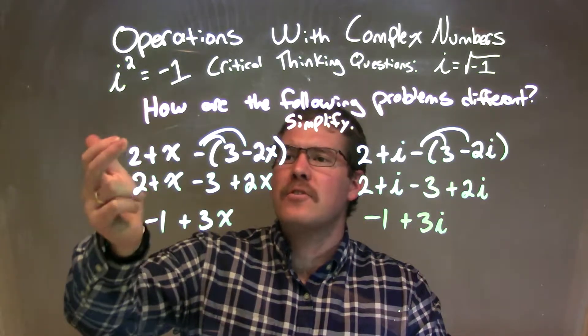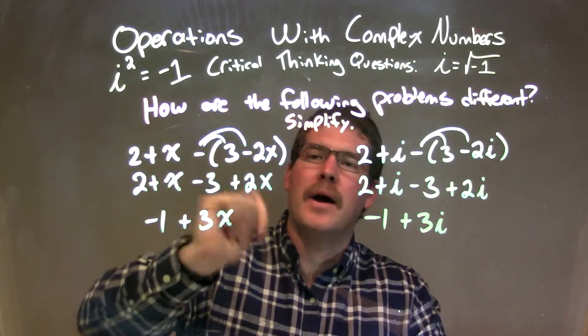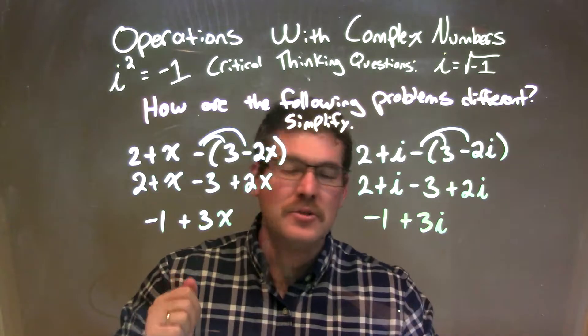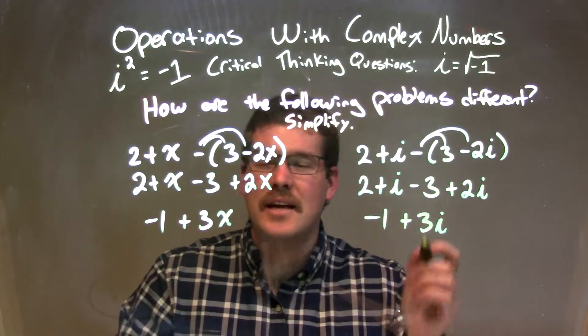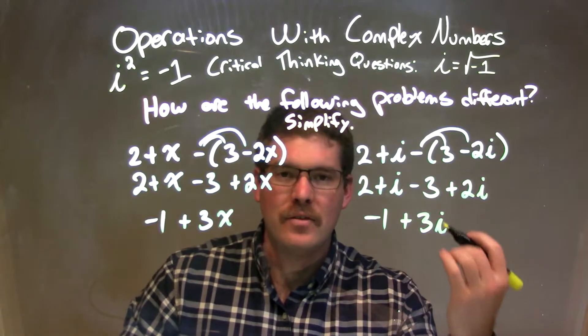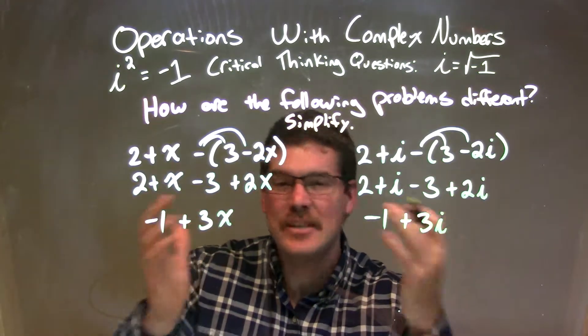We were given 2 plus x minus 3 minus 2x and 2 plus i minus 3 minus 2i. Essentially, two problems that are exactly the same, one with a variable, one with an imaginary number. We were asked to simplify and determine if there is any difference there.